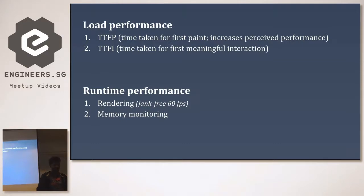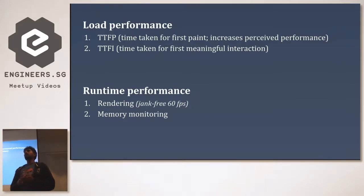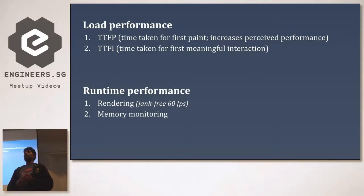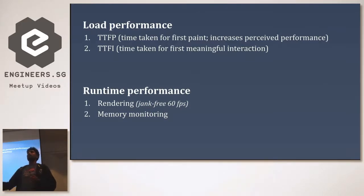For runtime performance, there are two important metrics. First is rendering — whenever users play around with your app the experience should be fluid, they shouldn't feel any jank. The goal is 60 frames per second. As front-end engineers we should avoid expensive DOM rewrites like reflows and repaints, because those affect frame rates badly.